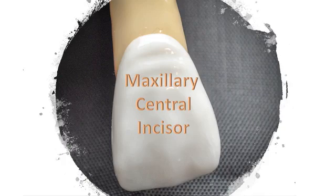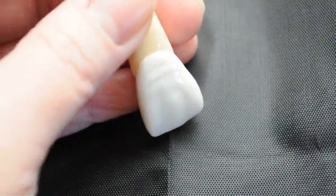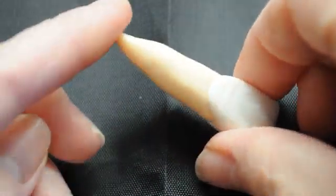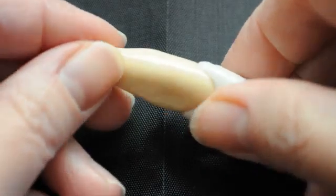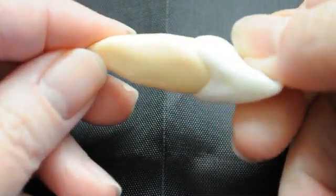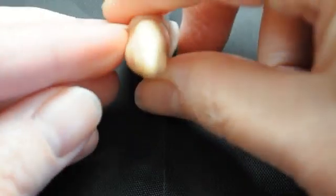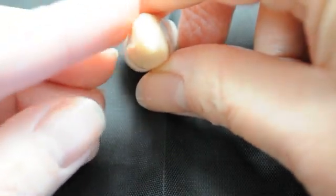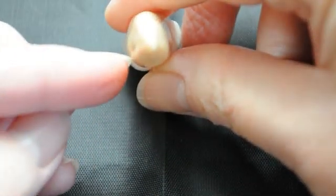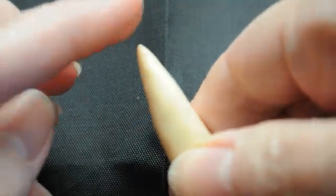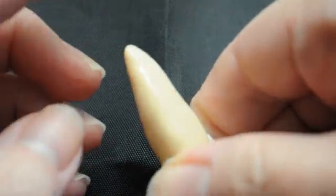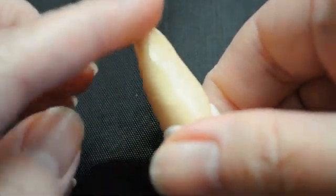In this video, we're going to take a detailed look at the maxillary central incisor. Let's start with the root. It's a single rooted tooth with a generally fairly conical shaped root, although in cross section it can be triangular in appearance. It tends to have a slightly rounded end, and there's usually no pronounced proximal root concavities.